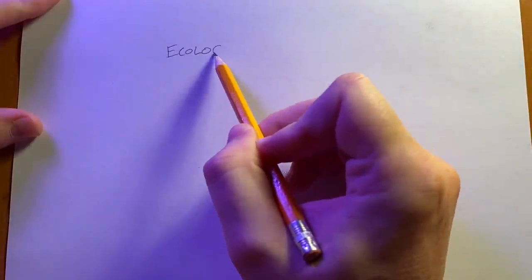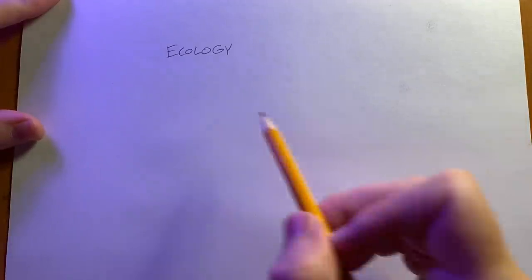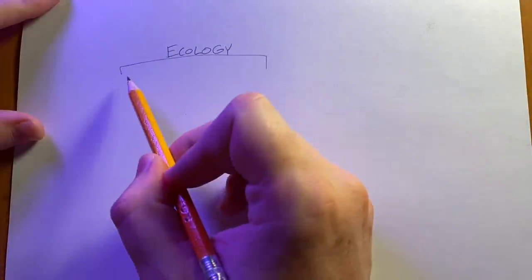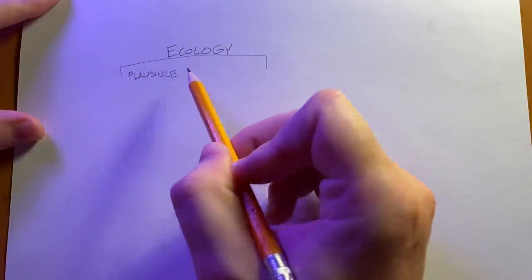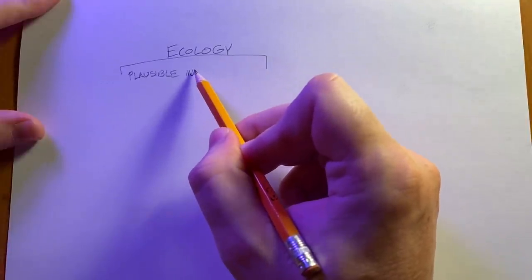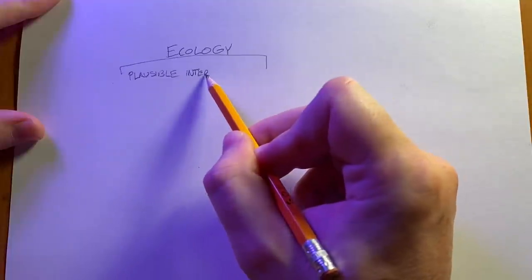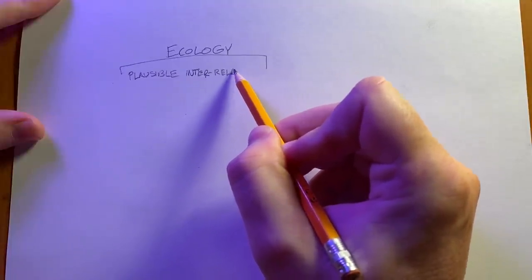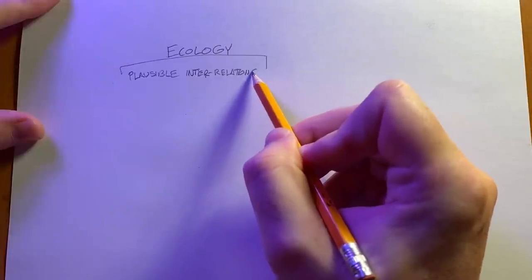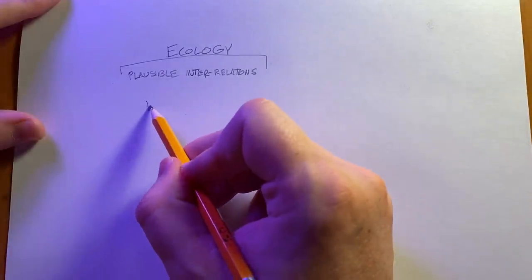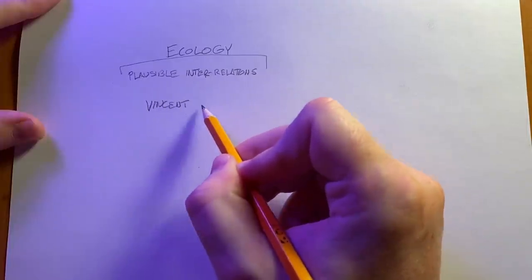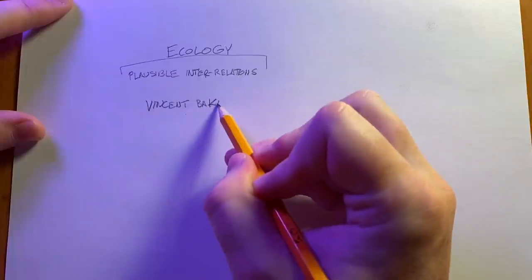Let's start with a definition of terms. Ecology, in gaming terms, basically means plausible interrelationships. Dungeon ecology means that everything in that gameable area seems like it has some reason to be there — there's a food source nearby for the monsters, and if there are people living there, they have a place to cook, sleep, defecate, and all that kind of stuff. It adds to the believability of the game world and the immersiveness of the experience.